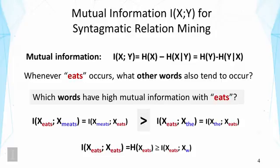Knowing 'the' doesn't really help us predict 'eats', and knowing 'eats' doesn't help us predict 'the' either. You can also easily see that the mutual information between a word and itself is the largest, equal to the entropy of that word. In this case the reduction is maximum, because knowing one allows us to predict the other completely, so the conditional entropy is zero and the mutual information reaches its maximum. It will be larger than or equal to the mutual information between 'eats' and any other word.